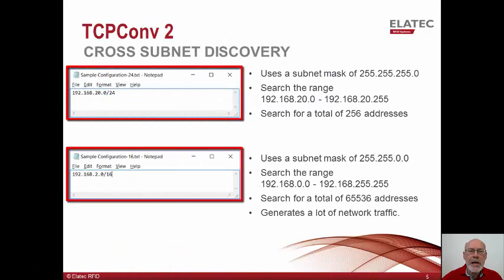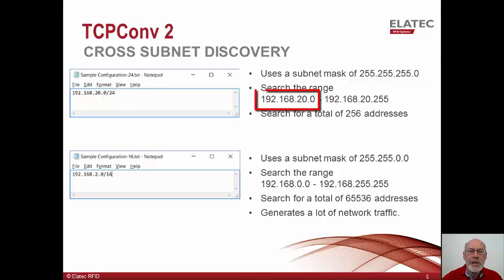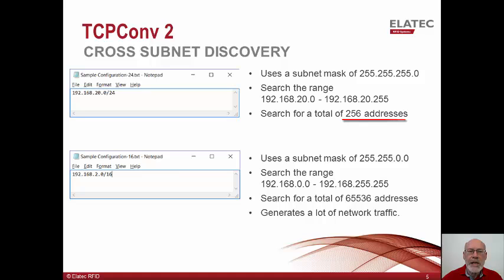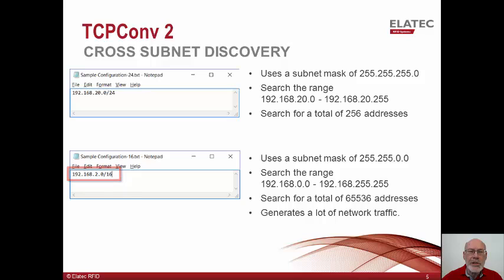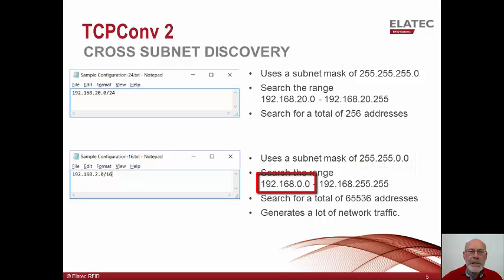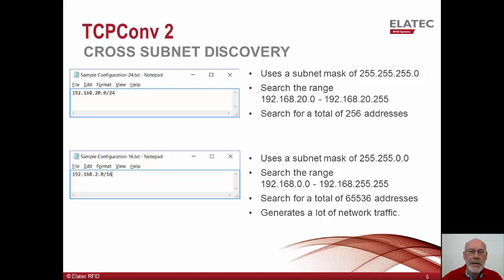This slide shows two sample configuration files. The first instructs the discovery tool to search the 192.168.20 subnet with a mask of 255.255.255.0. This will search the range of addresses from 192.168.20.0 through 192.168.20.255 for a total of 256 addresses. Additional lines could be added to the file to identify different subnets to search. The second example uses a mask of 255.255.0.0, searching from 192.168.0.0 to 192.168.255.255 — over 65,000 addresses. A search this large will generate a lot of unnecessary network traffic, so please try to restrict your searches to subnets known to contain converters.